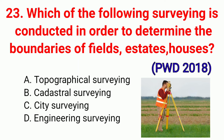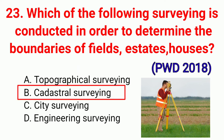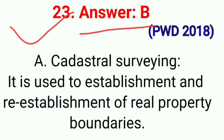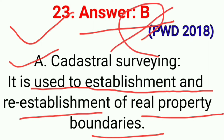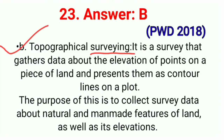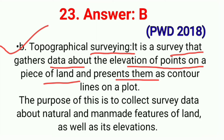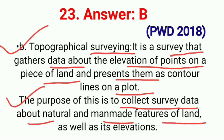Question No. 23. Which of the following surveying is conducted in order to determine the boundaries of field, estate and houses? Correct option B: Cadastral surveying. It is used to establish and re-establish real property boundaries. Second, Topographical surveying — it is the survey that gathers data about the elevation of points on a piece of land and presents them as contour lines on a plot, used to collect survey data about natural and man-made features of land. Correct option B.